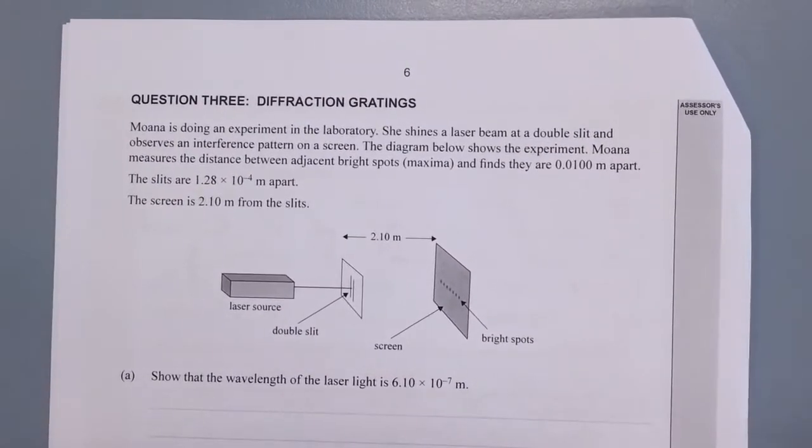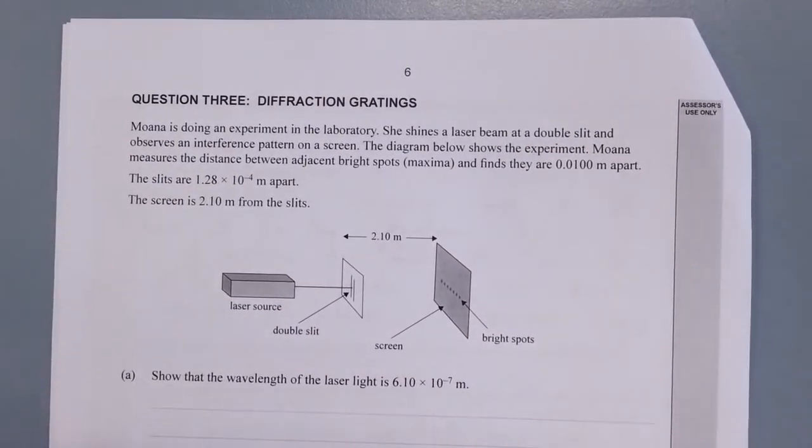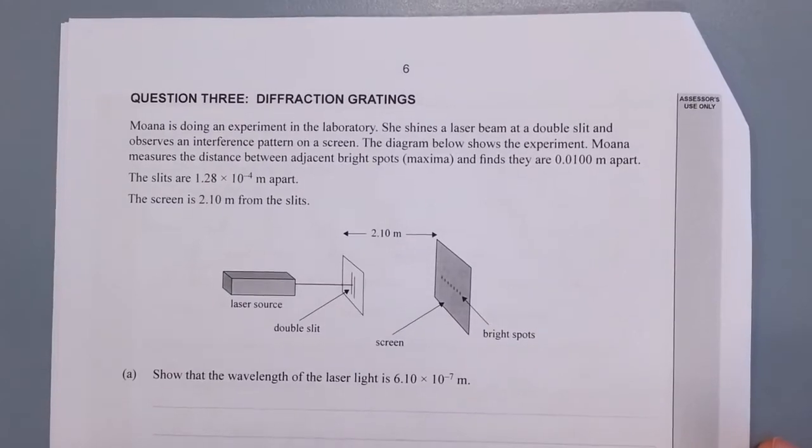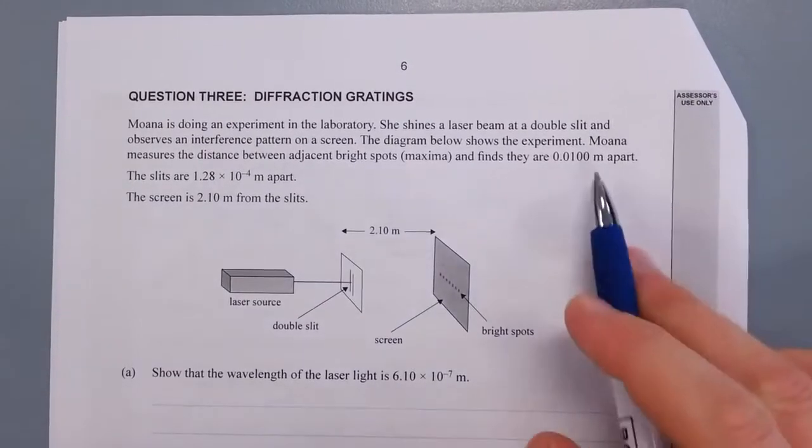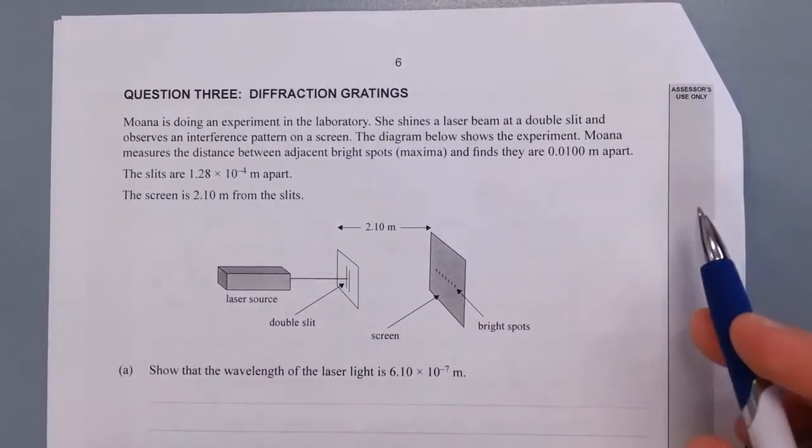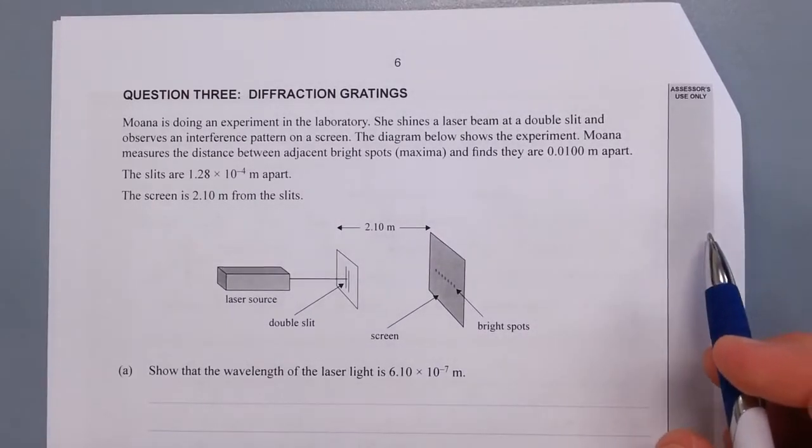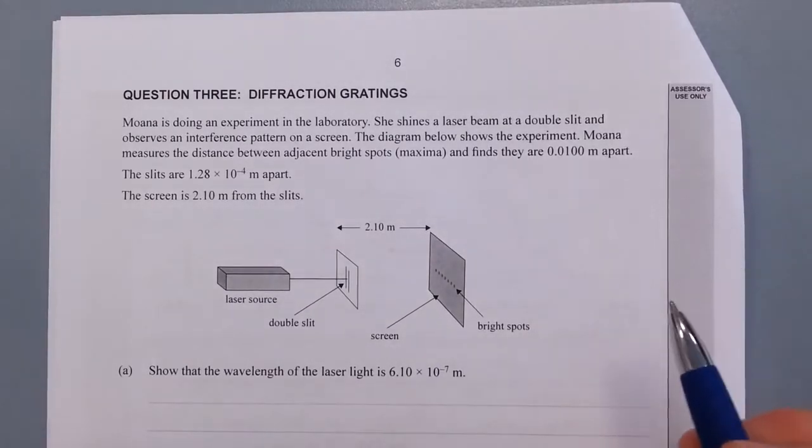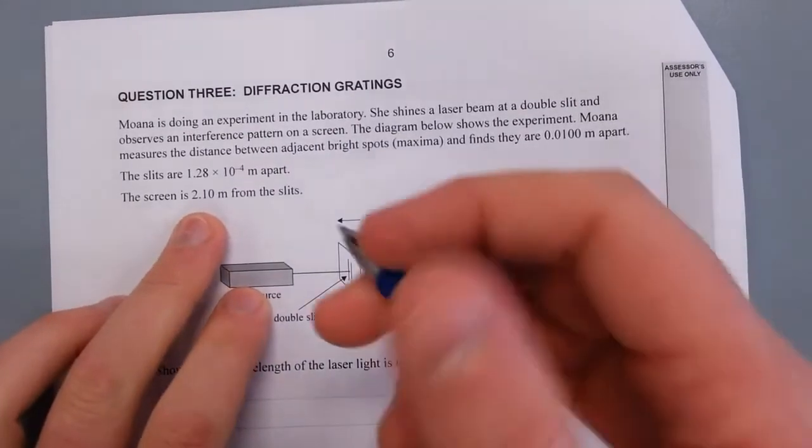Moana is doing an experiment in the laboratory. She shines a laser beam at a double slit and observes an interference pattern on the screen. The diagram below shows the experiment. Moana measures the distance between the adjacent bright spots (maxima) and finds they are 1 cm apart, or 0.01 m apart. The slits are 1.28 times 10^-4 m apart, and the screen is 2.1 m from the slit.